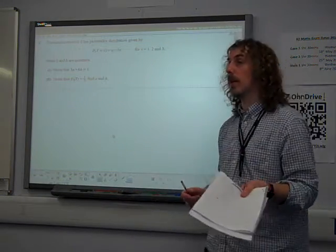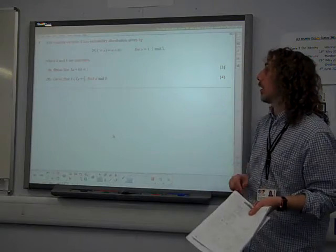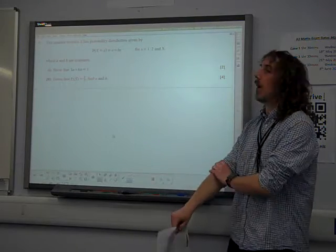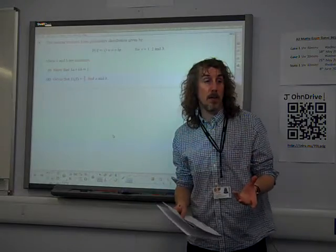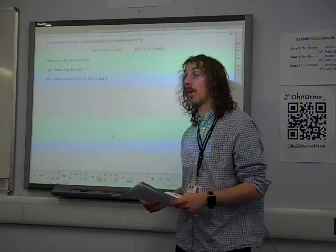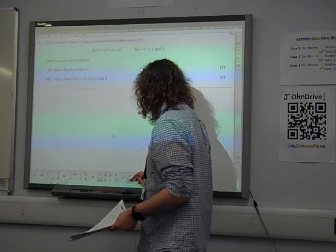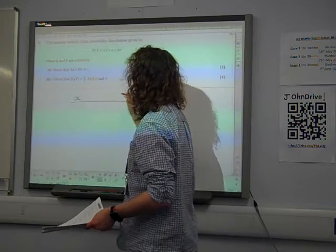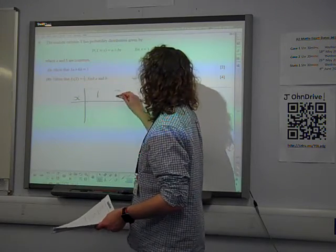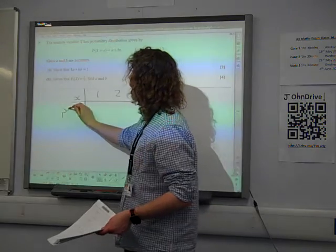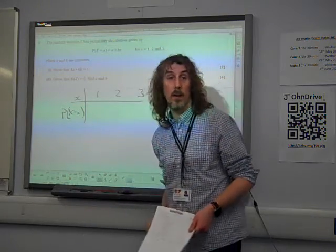The random variable is given by this formula. Show that 3a plus 6b equals 1. What do we know about discrete random variables? We know that the probabilities always add up to 1. As I always like to do for these things, I did a little table of values, because that's how the probability distribution...